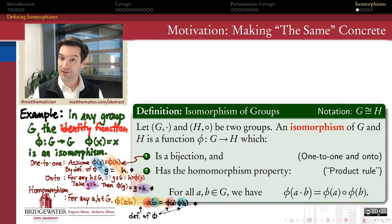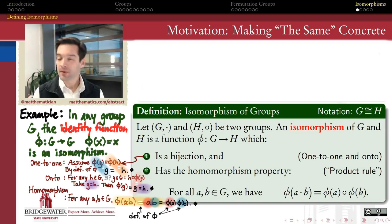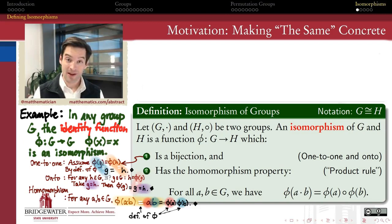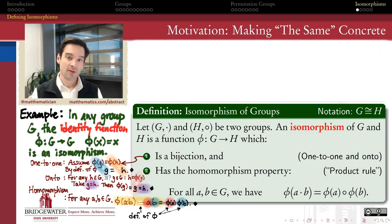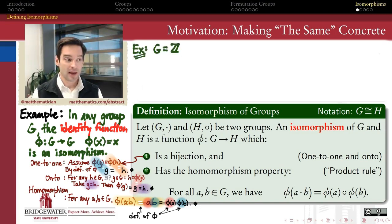Therefore, every group is the same as itself — which doesn't come as much of a surprise. But the identity function is not necessarily the only isomorphism from a group to itself; there may be other ways of associating a group's elements to other elements of that very same group with identical properties. The set of different ways in which it may do so is called the automorphism group of G, which we'll meet a few videos from now. Let's move to a more concrete example.